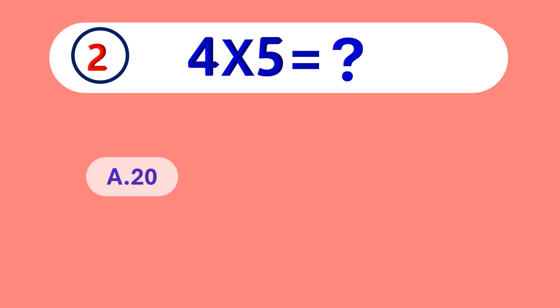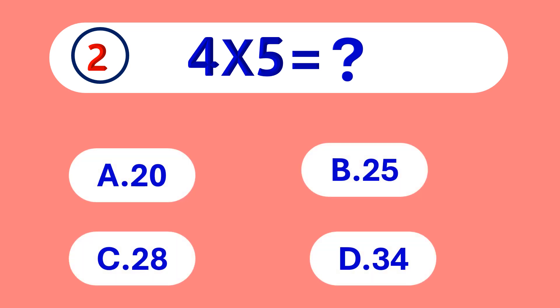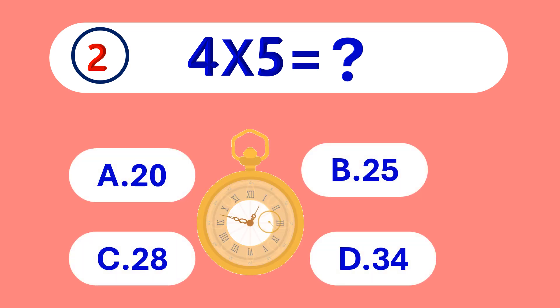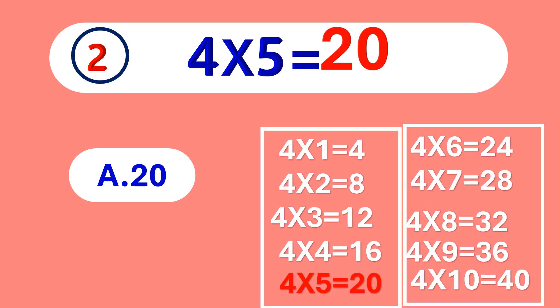4 times 5 is equal to... 20. 4 times 5 is 20.